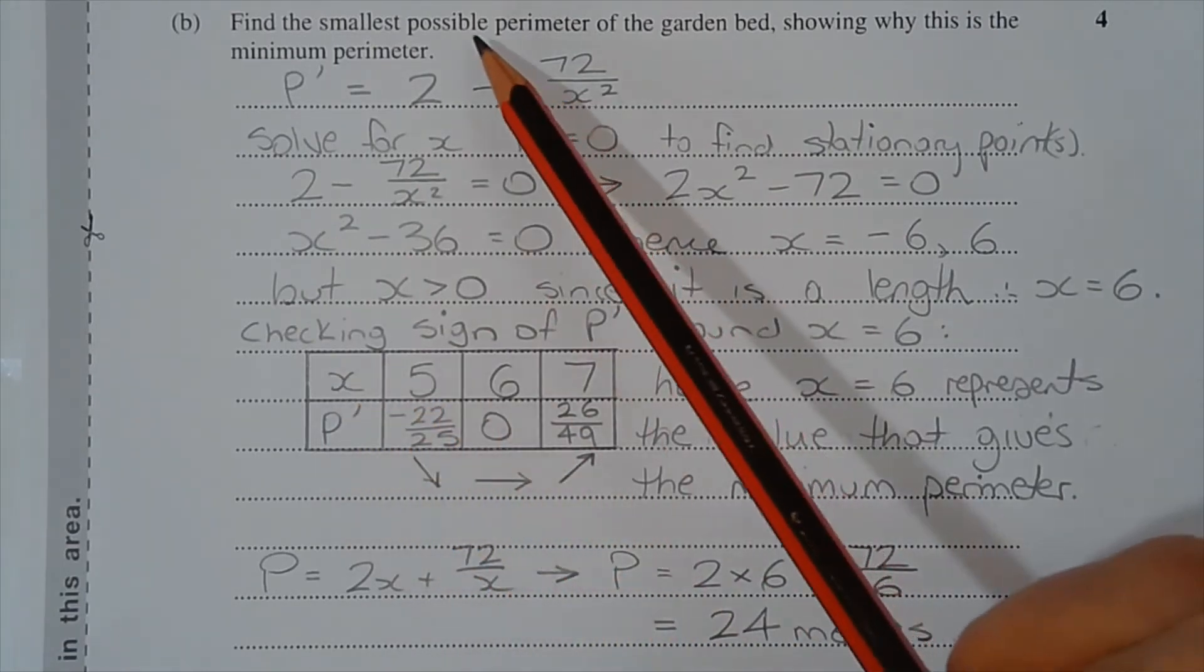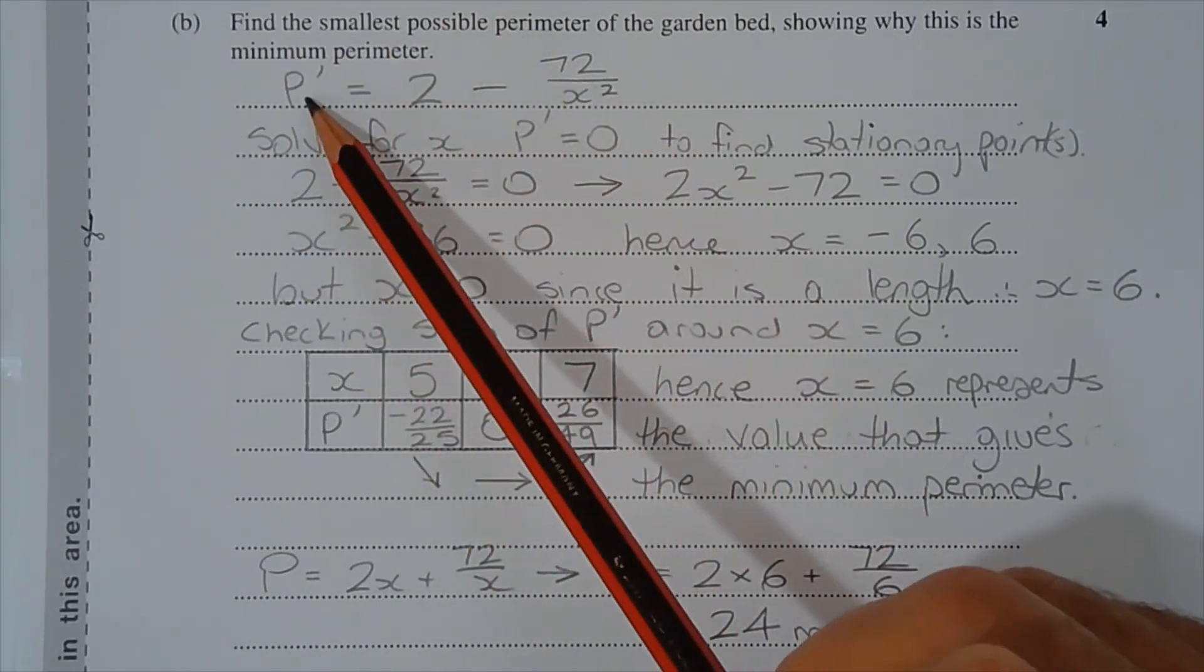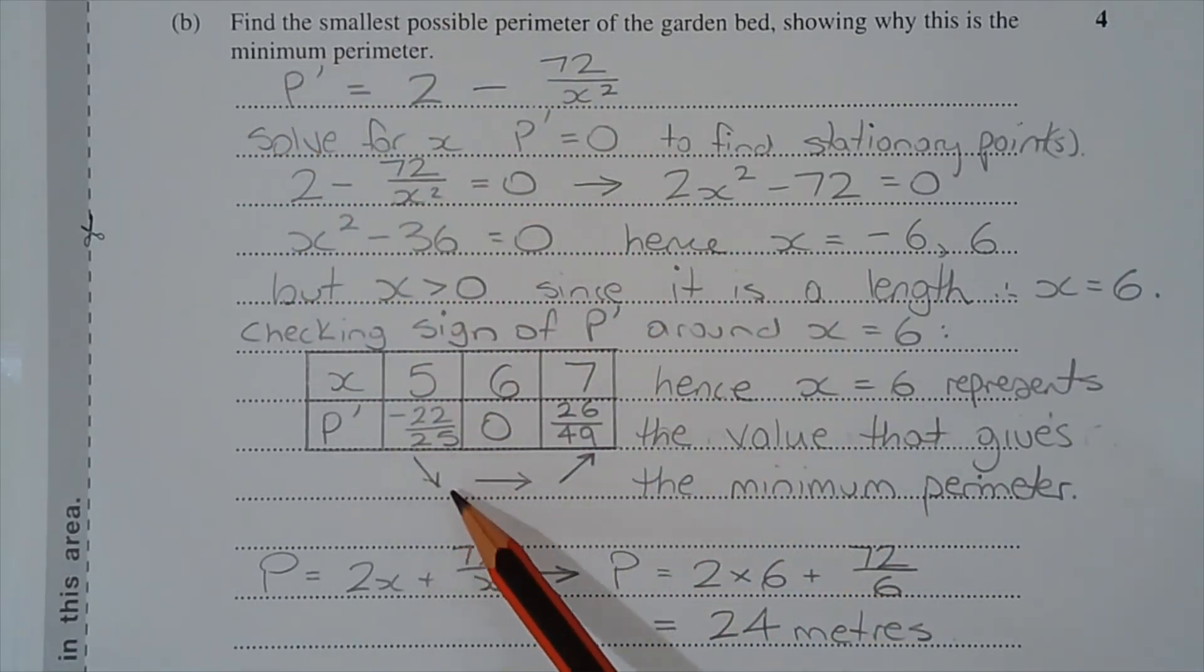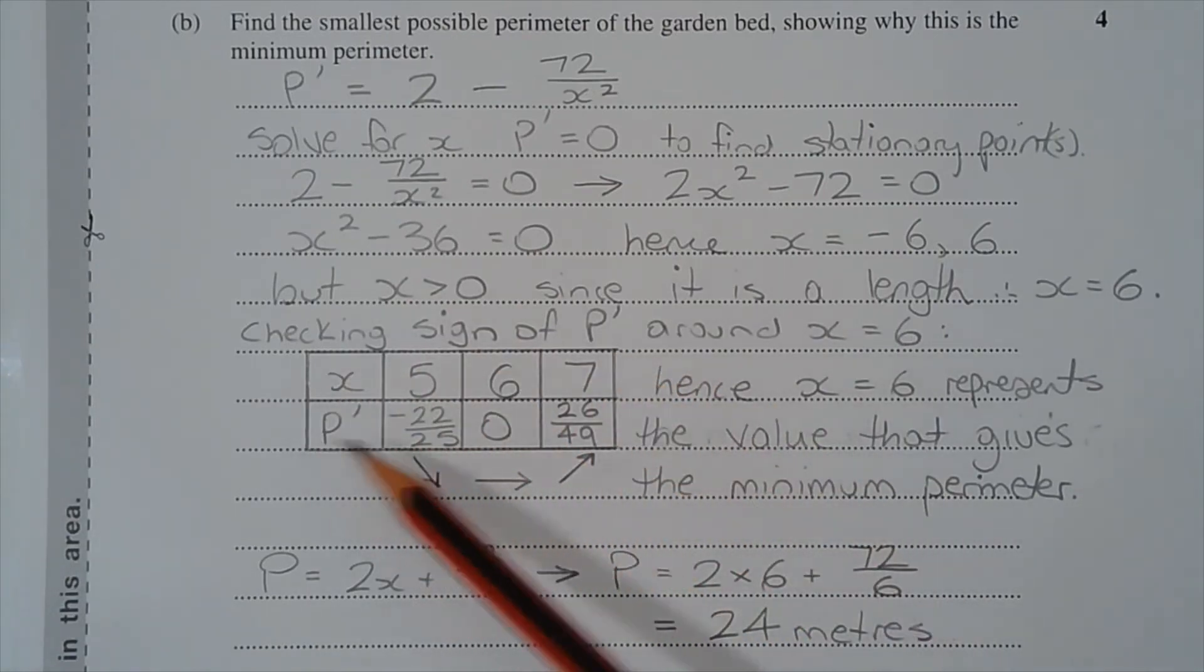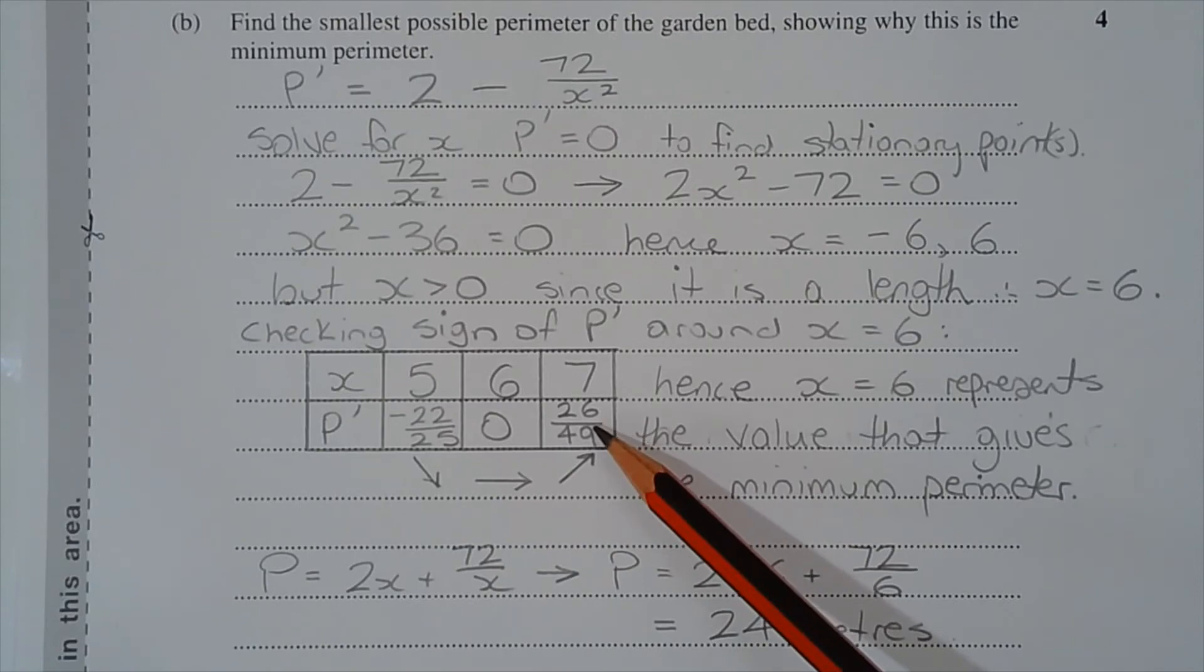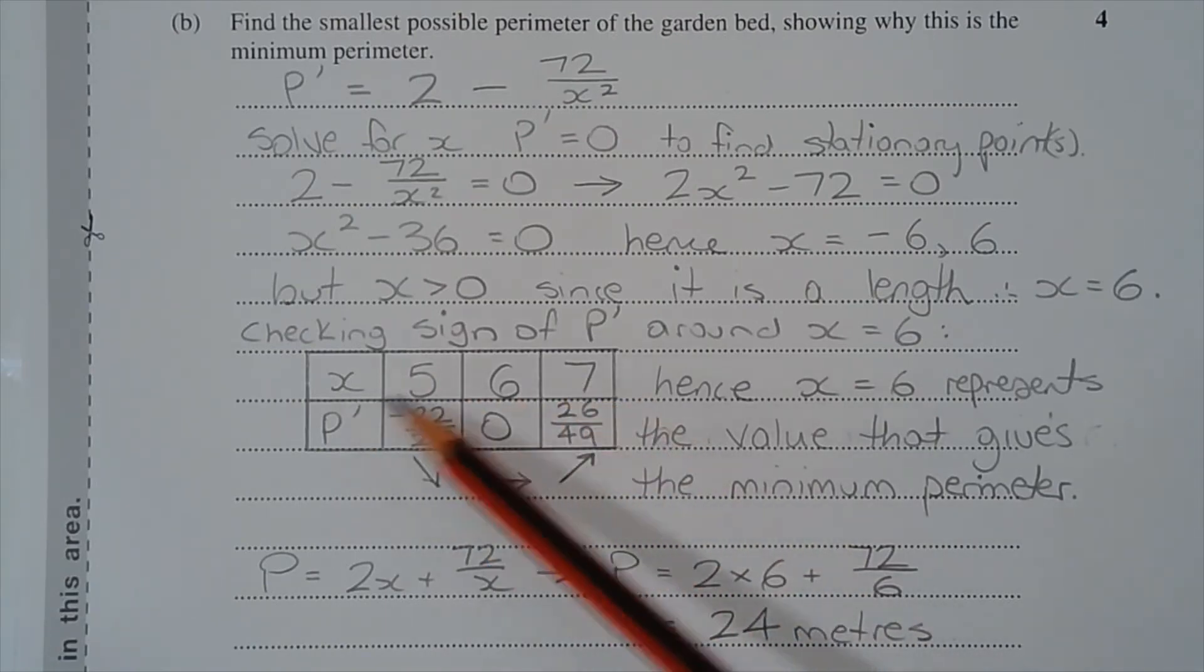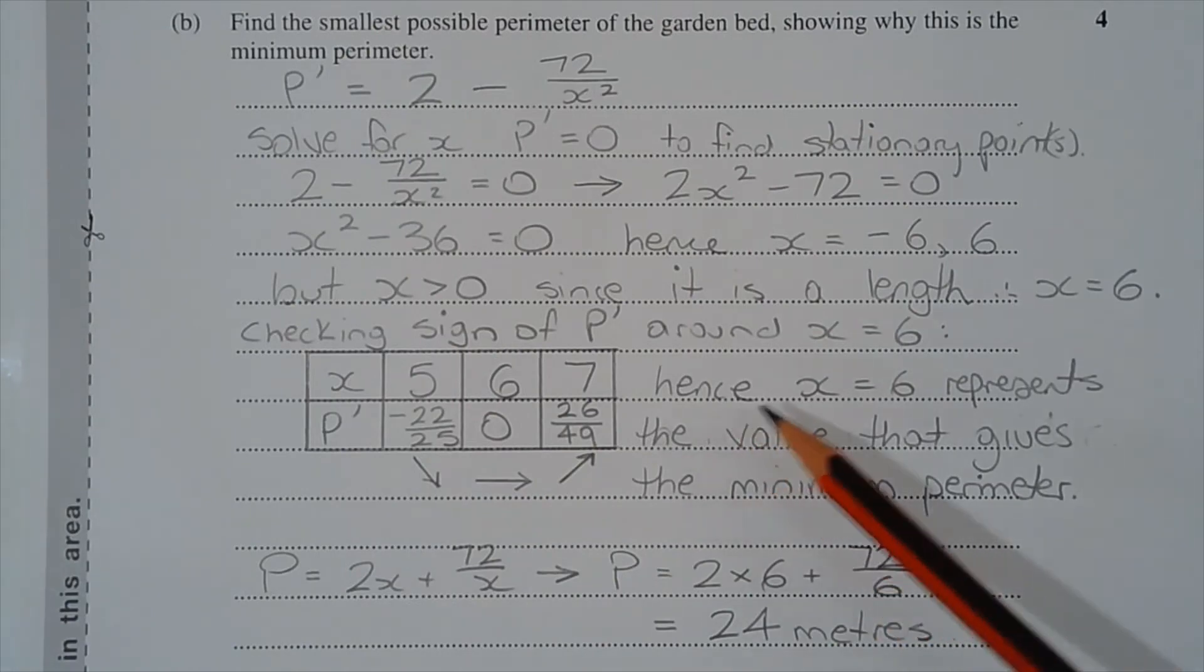And at x equals 7, p dash is equal to 26 over 49, and we can see that that's a positive gradient to the right hand side of x equals 6. So x equals 6 represents the value that gives the minimum perimeter.